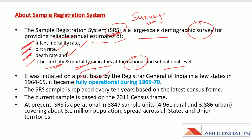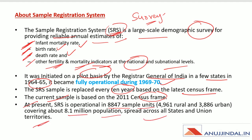It was initiated on a pilot basis by the Registrar General of India in a few states in 1964-65, but became fully operational during 1969-70. It is replaced every 10 years based on the latest census frame, and the current sample is based on the 2011 census frame. At present, SRS is operational in 8,847 sample units covering about 8.1 million population spread across all states and union territories. The current Registrar General of India is Dr. Vivek Joshi.